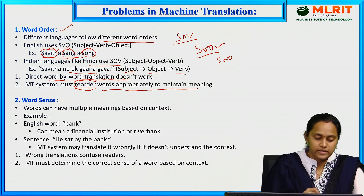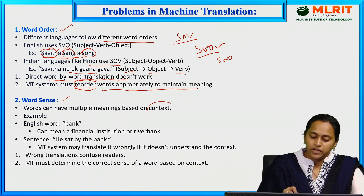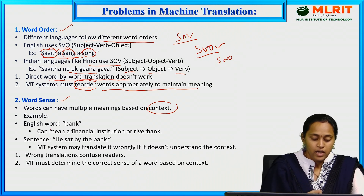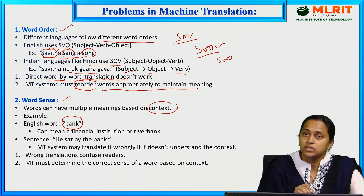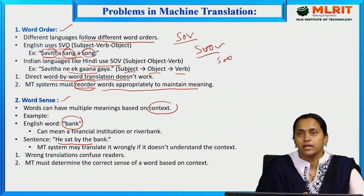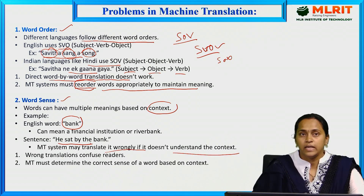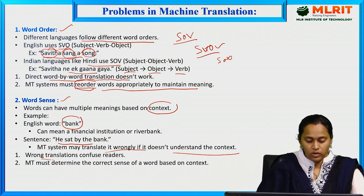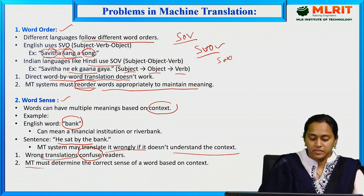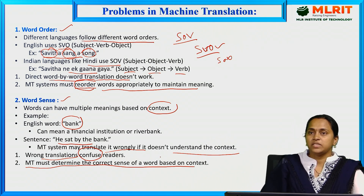The second problem is word sense. Words can have multiple meanings based on context. For example, the English word 'bank' can mean a financial institution or a river bank. In the sentence 'he sat by the bank,' machine translation may translate it wrongly if it does not understand the context, creating ambiguity. Machine translation must determine the correct sense of a word based on context.